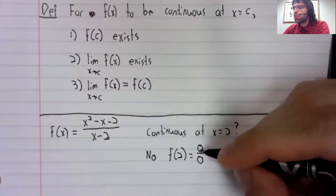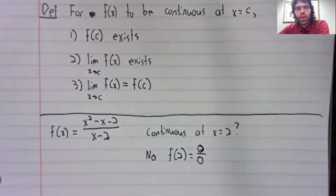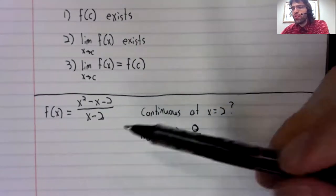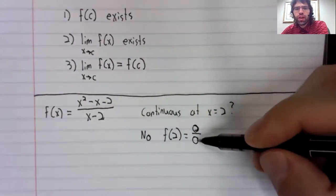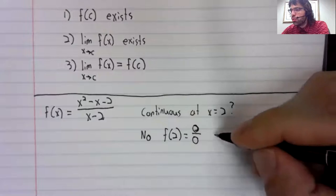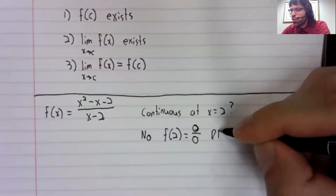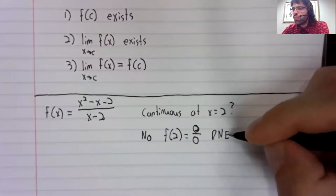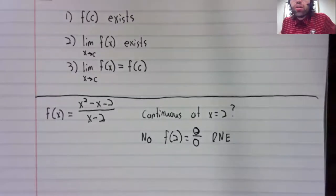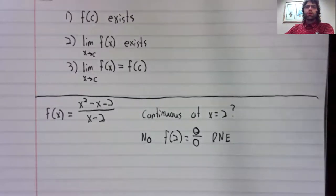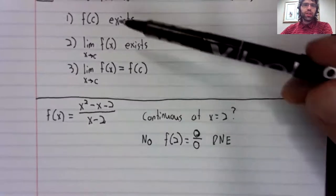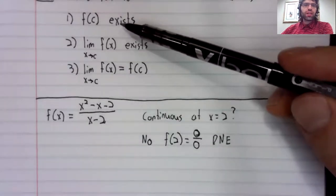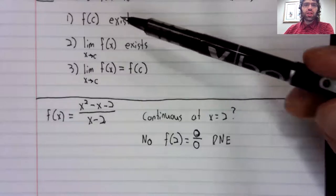What am I writing? F of two. If we plug two in here, we get zero divided by zero. So, in particular, we get the division by zero error. This doesn't exist. So we do not satisfy this condition.